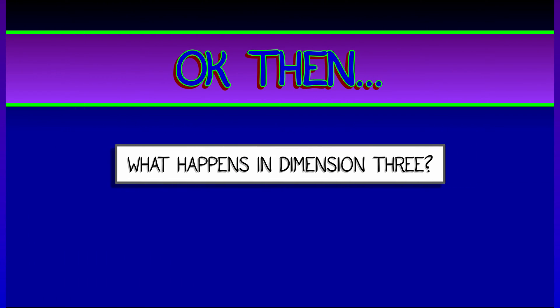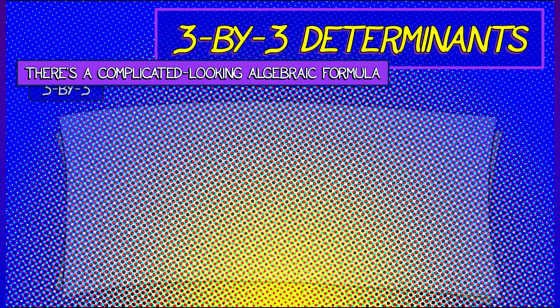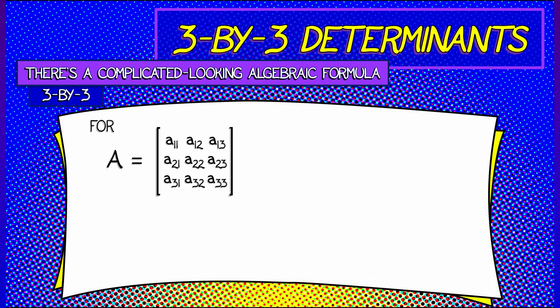Okay then, well, let's think about what happens in dimension three. This gets a little more involved. Let's say that we have a three-by-three matrix with entries A sub I, J.